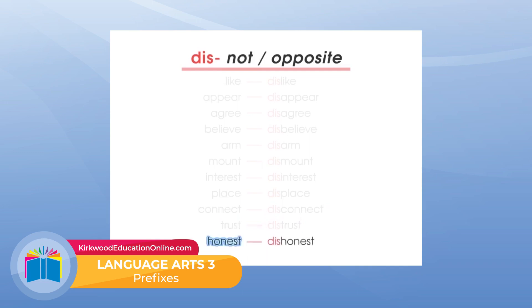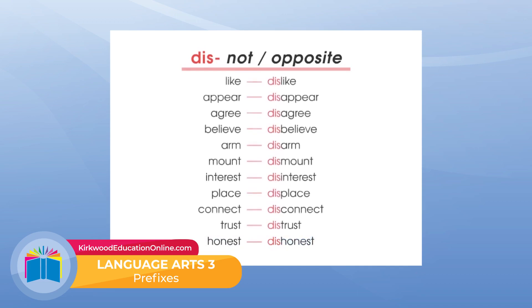'Honest.' Dishonest. He is a very honest person doing business. Or he's dishonest — he's a crook. All of these mean 'not' or 'opposite of.'